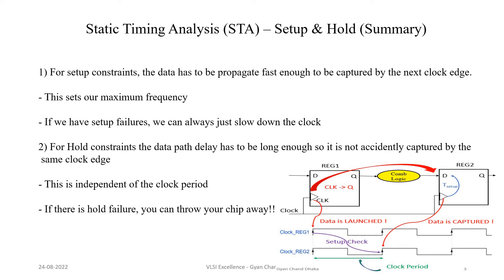Now let's see the hold constraint summary. For hold constraint, the data path delay has to be long enough so that it is not accidentally captured by the same clock edge. As per the hold definition, the data at the D input pin of the capture flip-flop should be stable for T_hold time after the rising edge of the clock. The hold analysis is done at the same corresponding clock edge where the data is launched. The data launched at this clock edge should not reach before the T_hold time at the D input pin of the capture flip-flop — that means this delay should be more than the T_hold time of the register.